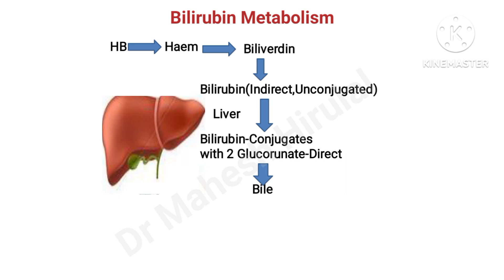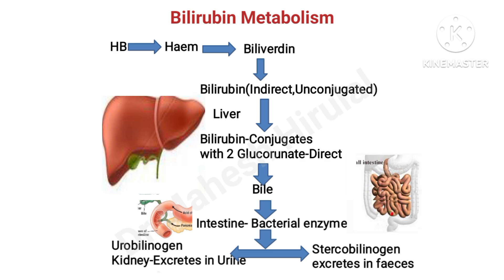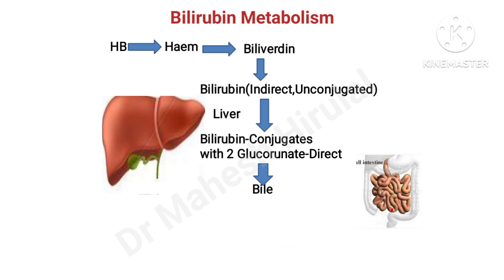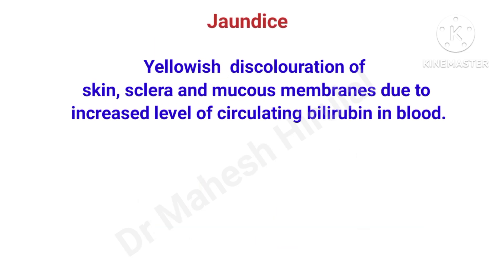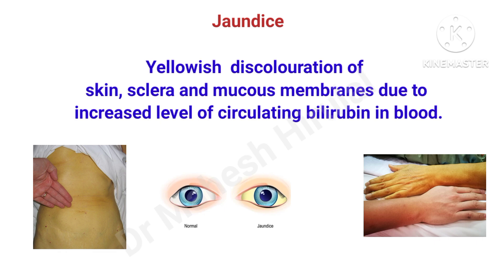This direct bilirubin enters the intestine through the bile. In the intestine, by bacterial enzymes, it is converted into urobilinogen and stercobilinogen. Urobilinogen is reabsorbed and excreted through the urine, while stercobilinogen gives color to fecal matter and is excreted through the feces. Jaundice is a medical condition where yellowish discoloration of skin, sclera and mucous membranes is seen due to increased levels of circulating bilirubin in blood.